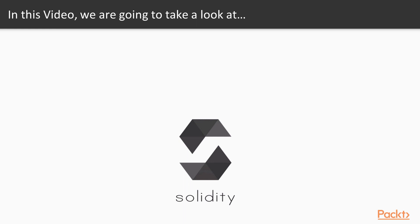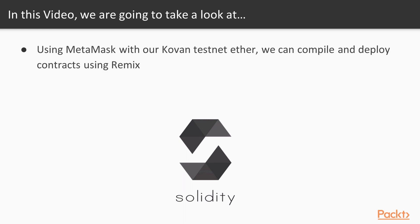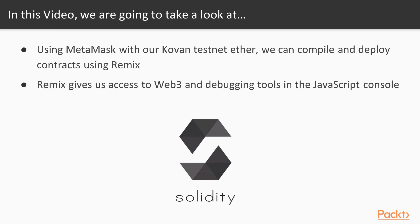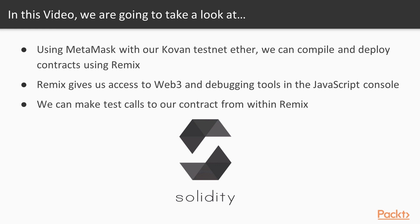Before we go further, let's pause for a moment and think about what we've already learned. Using MetaMask and our Kovan Testnet Ether, we know that we can compile and deploy smart contracts to the Kovan Testnet using Remix. Remix gives us access to Web3 and debugging tools in the JavaScript console. As we saw in Section 1, the JavaScript environment provided by Remix also gives us the console output of our function calls to our smart contract.